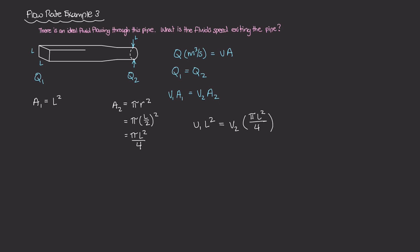Now, if I multiply both sides by 4, I get 4 times velocity 1 times L squared is equal to V2 times pi times L squared. And now if I divide both sides by pi times L squared, then on the left hand side, I have 4 times V1 times L squared, all divided by pi times L squared. And that is equal to V2. And you'll notice that L squared cancels out. So what we're left with is V2 is equal to 4 times V1 over pi.